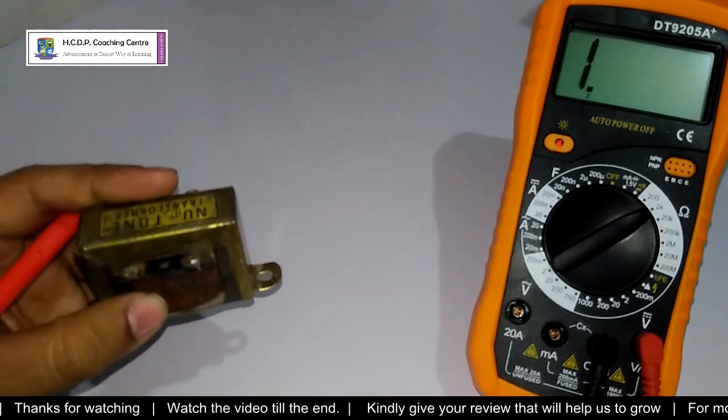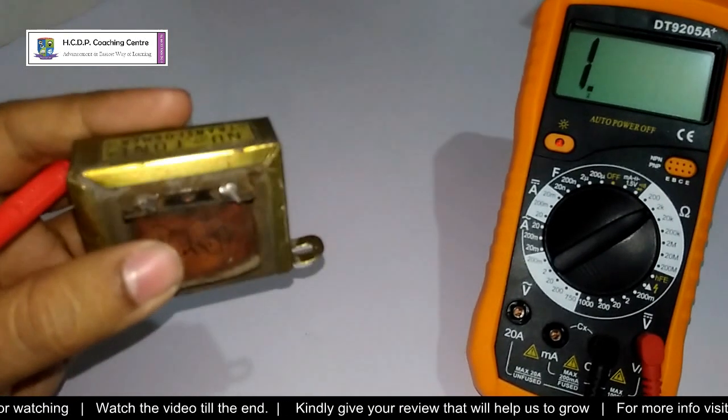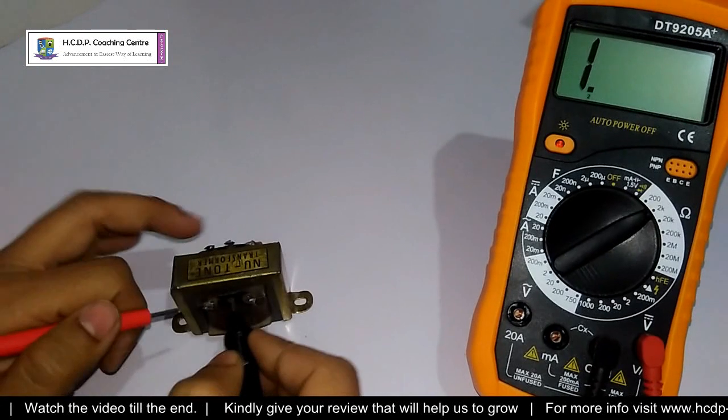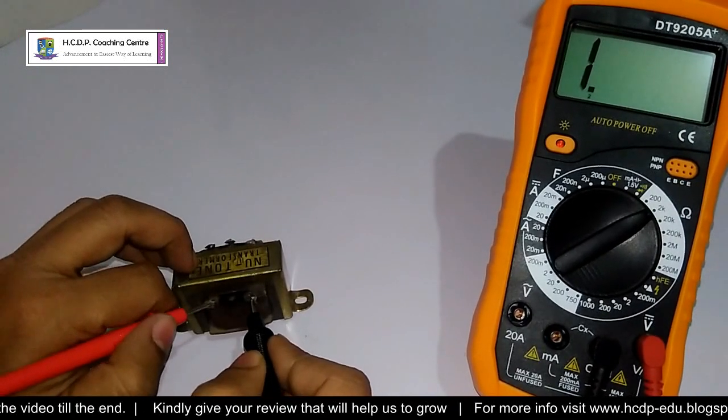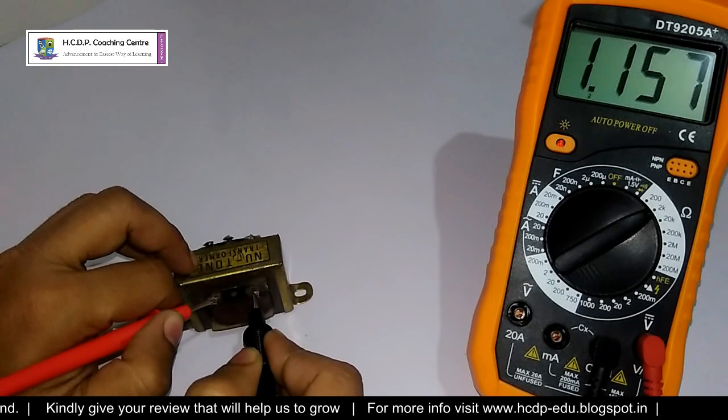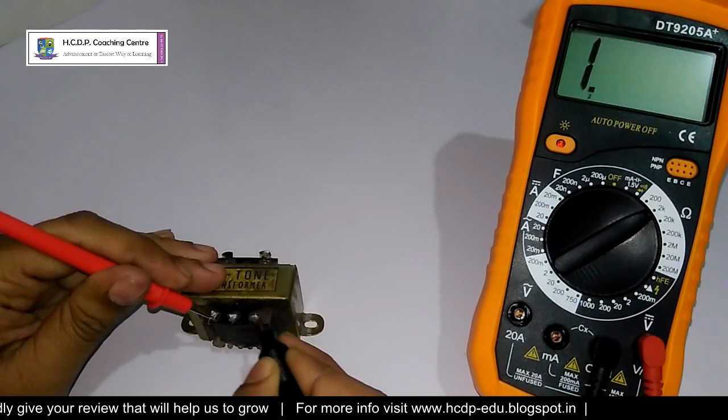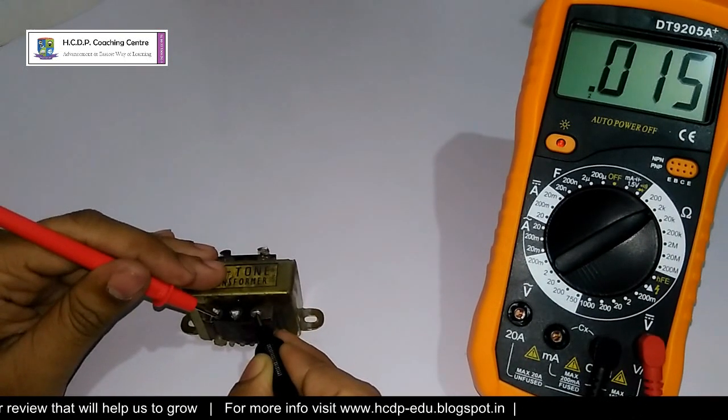Now I take another 18 volt transformer. It has a primary winding of 1.15 kilo ohms resistance and secondary windings of 0.014 kilo ohms resistance.